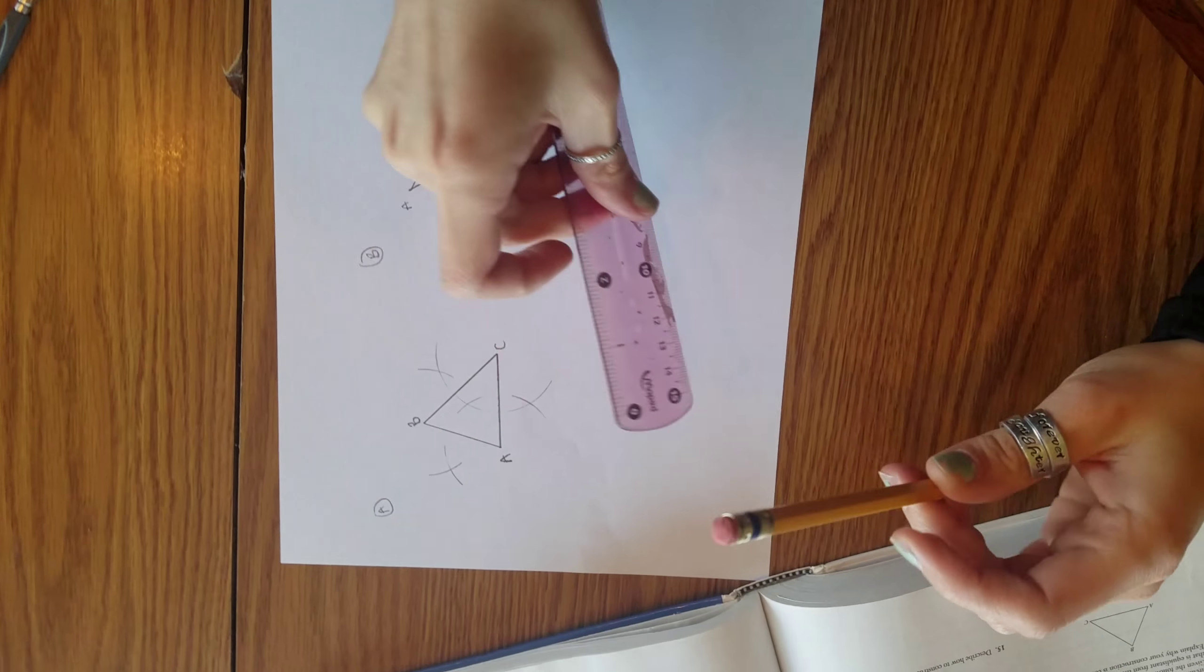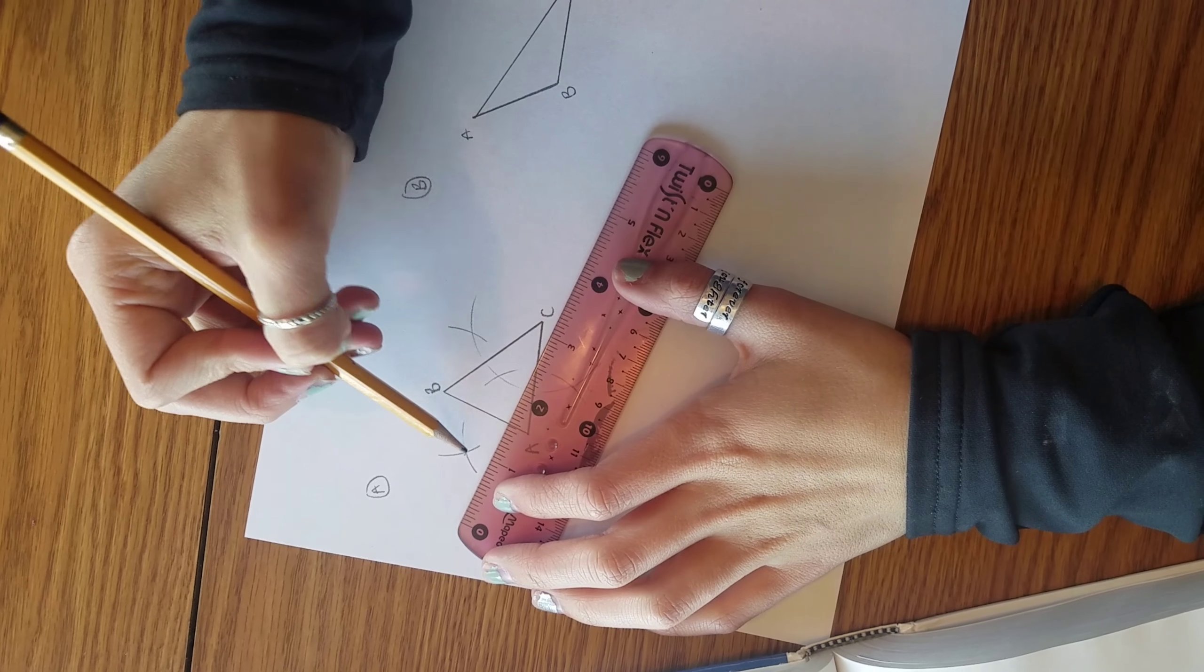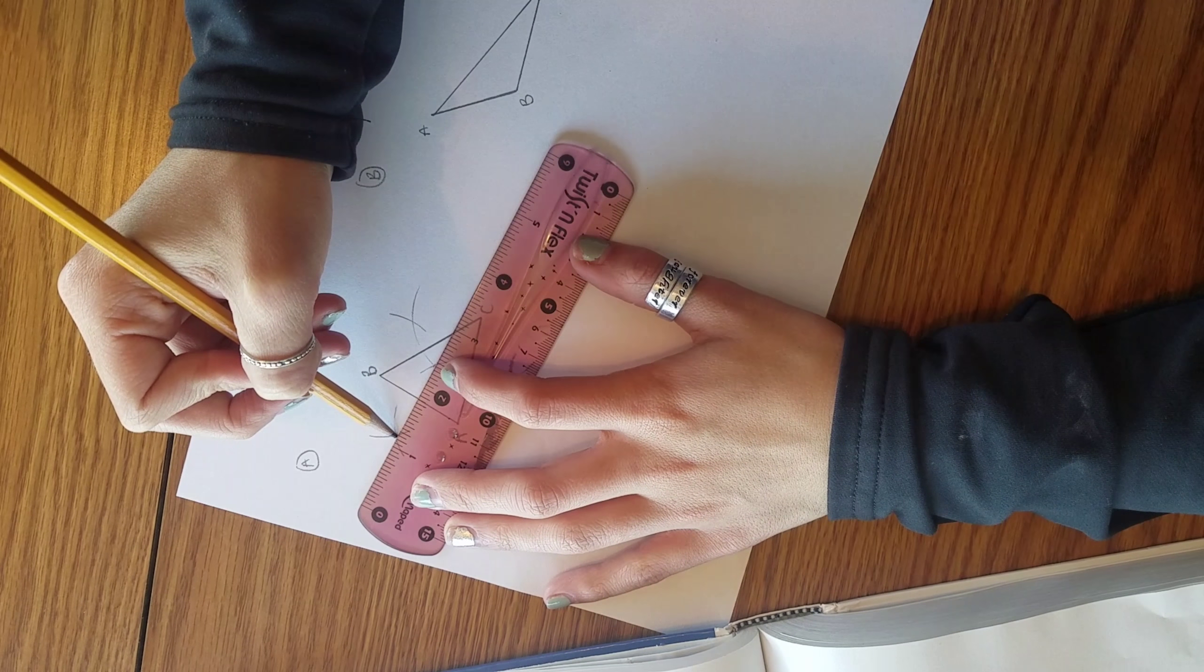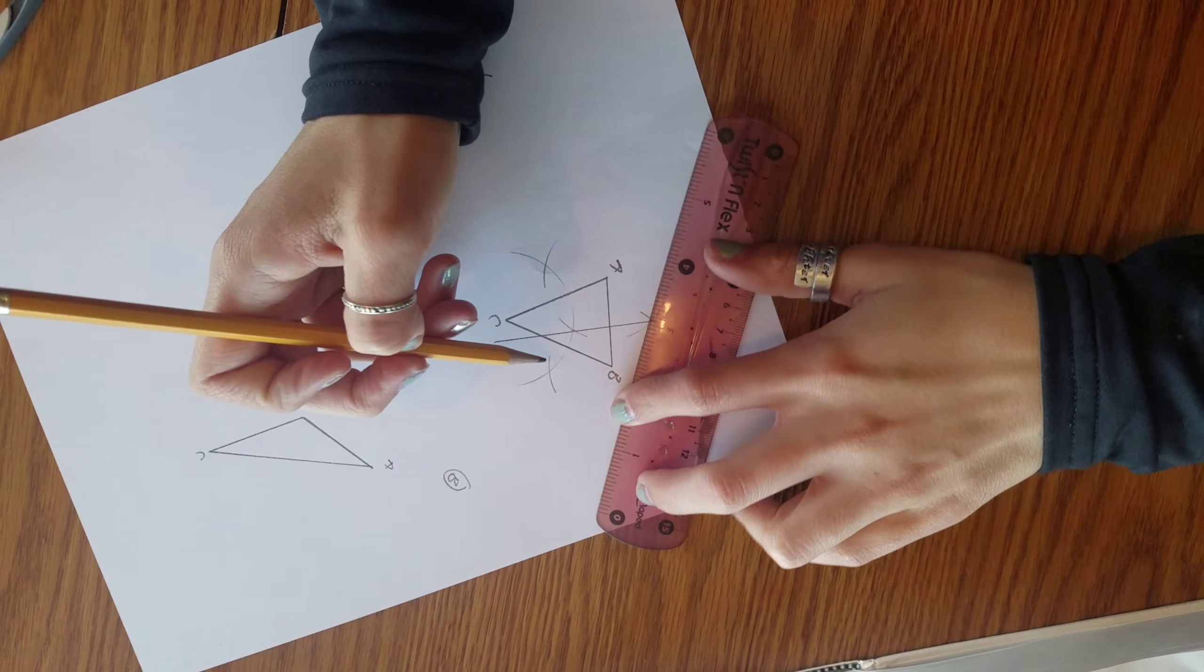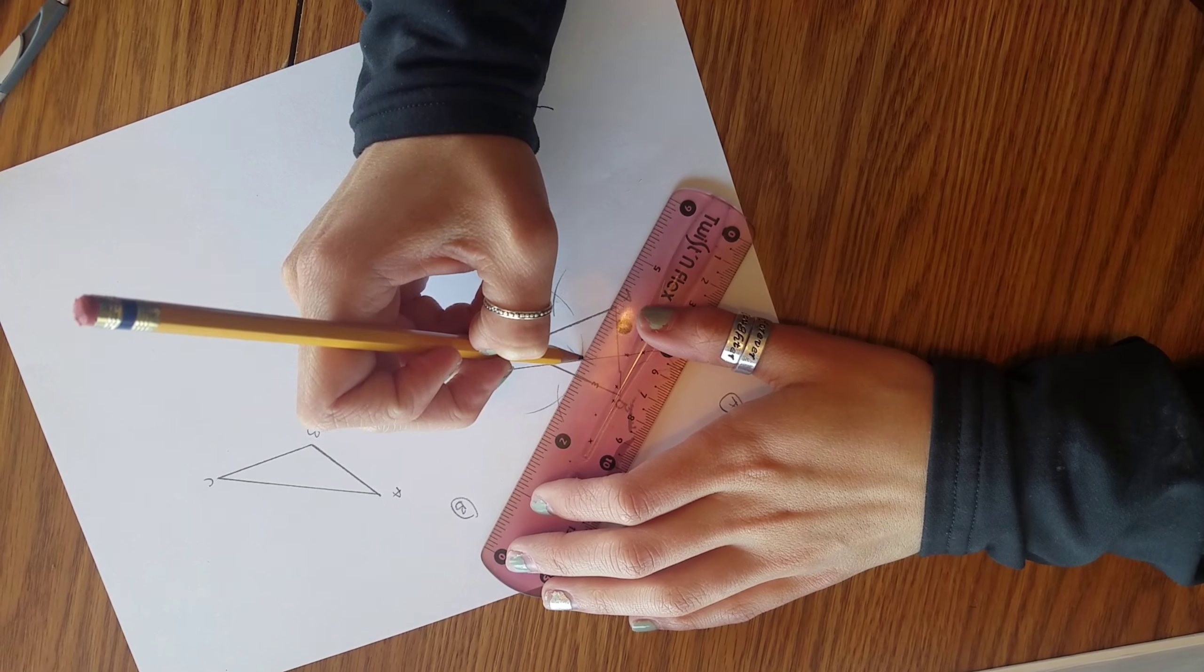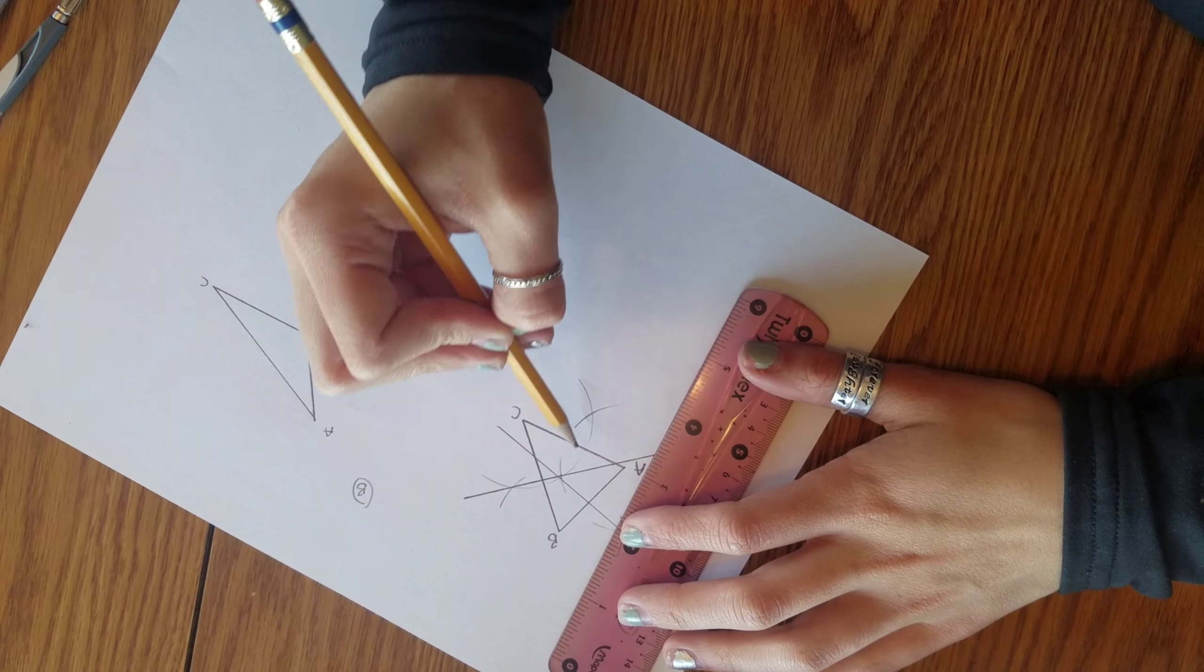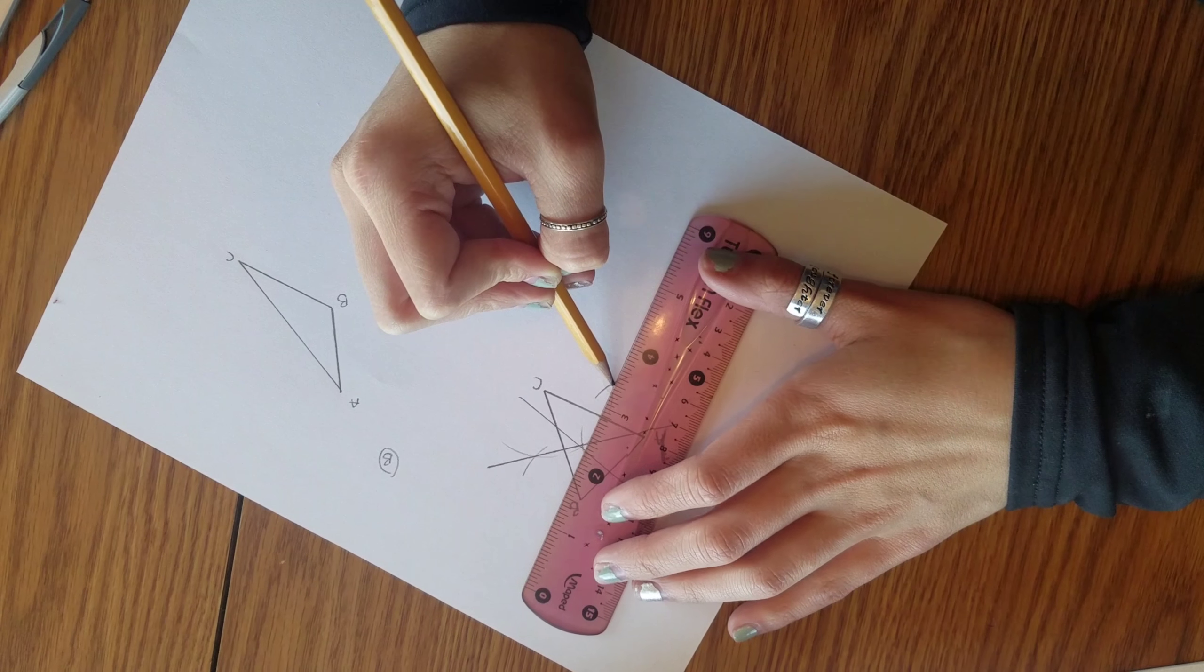Using our straight edge and pencil, we're going to connect two intersections for each. So here we have the perpendicular bisector of side A, B. And then over here we have the perpendicular bisector of side B, C. And then we have the perpendicular bisector of side A, C.